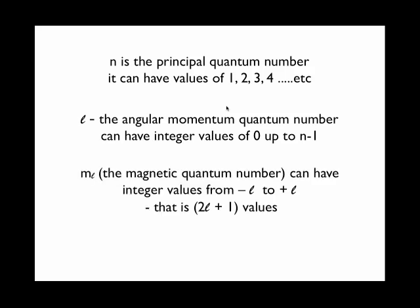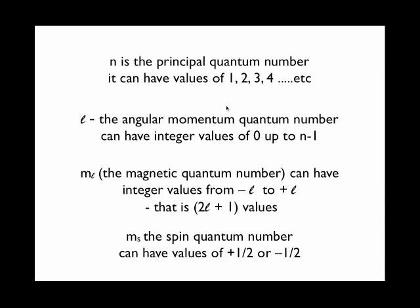Similarly, M sub L, the magnetic quantum number, depends on the value of L and it can have whole number values from minus L to plus L. M sub S doesn't depend on any of the quantum numbers and it can only have values of either plus or minus 1 half.